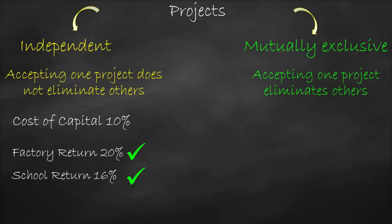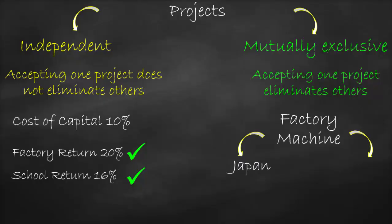Now let's say we are going to build a factory and we need to buy machines — either from Japan or from China. This is an example of mutually exclusive projects: if we buy machines from Japan, we are not going to buy them from China, and vice versa. If you choose one, you must reject the other. That's why you need to be careful about the type of projects you're evaluating.